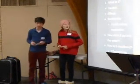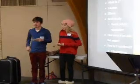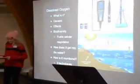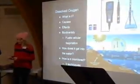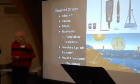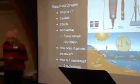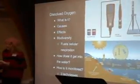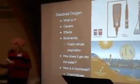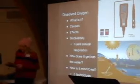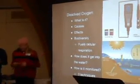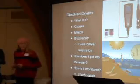Dissolved oxygen is the amount of non-compound oxygen in a body of water. Some causes are biological activity, elevation, velocity, and temperature. Temperature really affects the solubility, which determines how much oxygen can go into the water. Cold water holds more oxygen; warm water holds less oxygen. Oxygen can get into the river by diffusion and photosynthesis in aquatic plants.